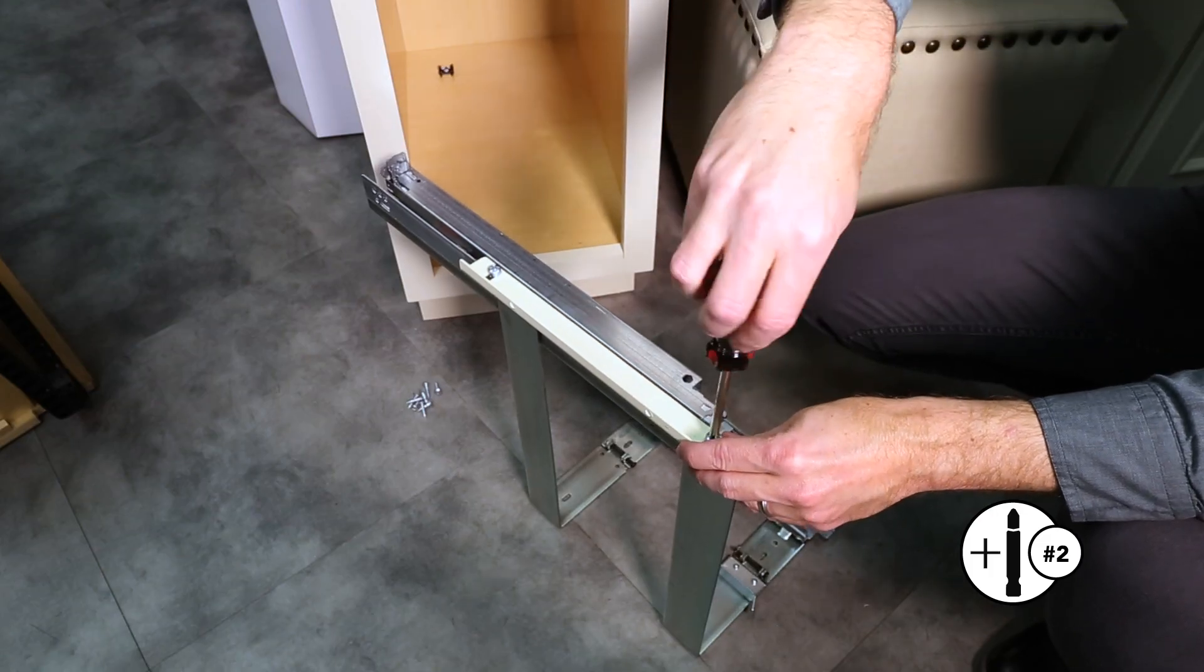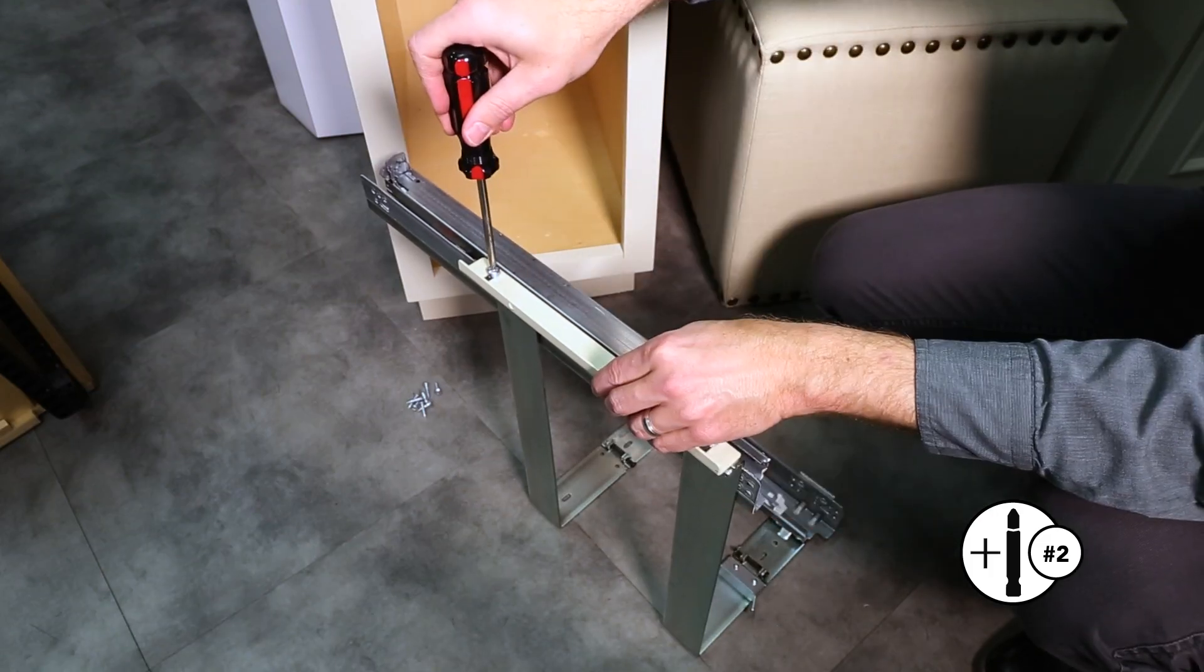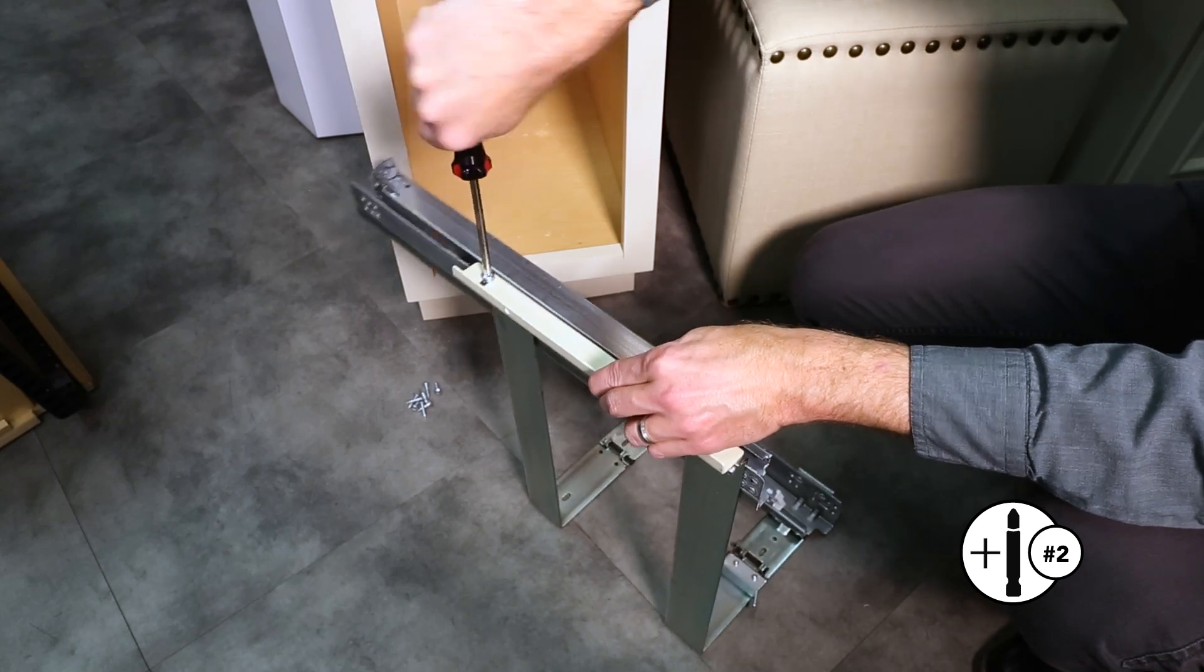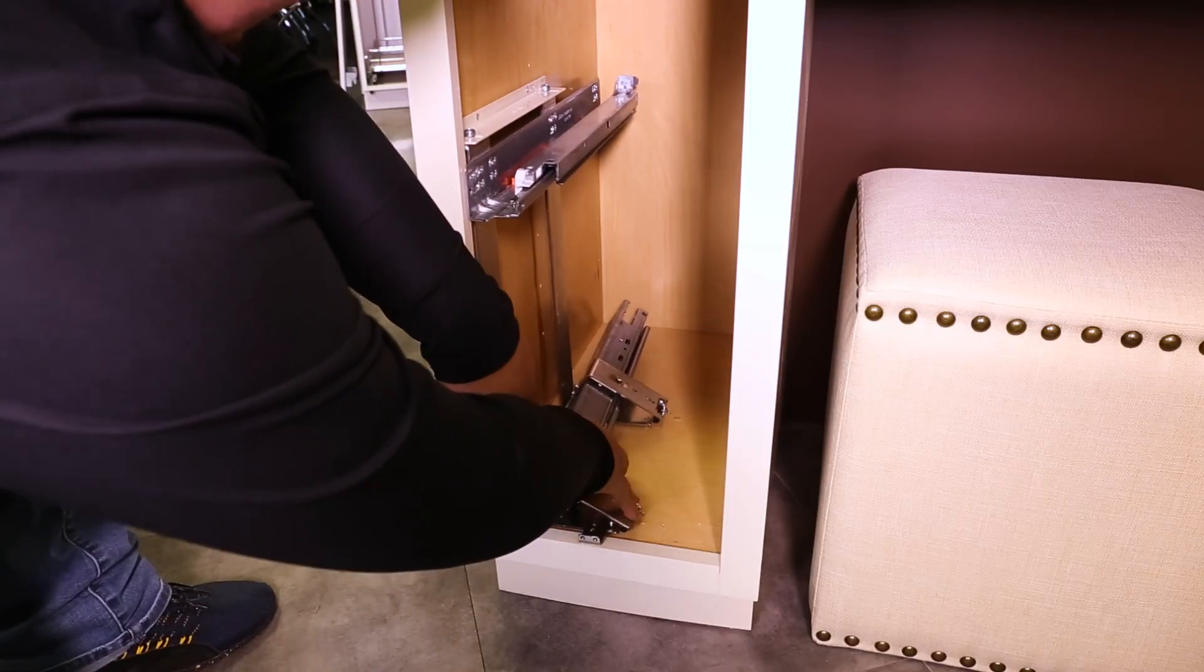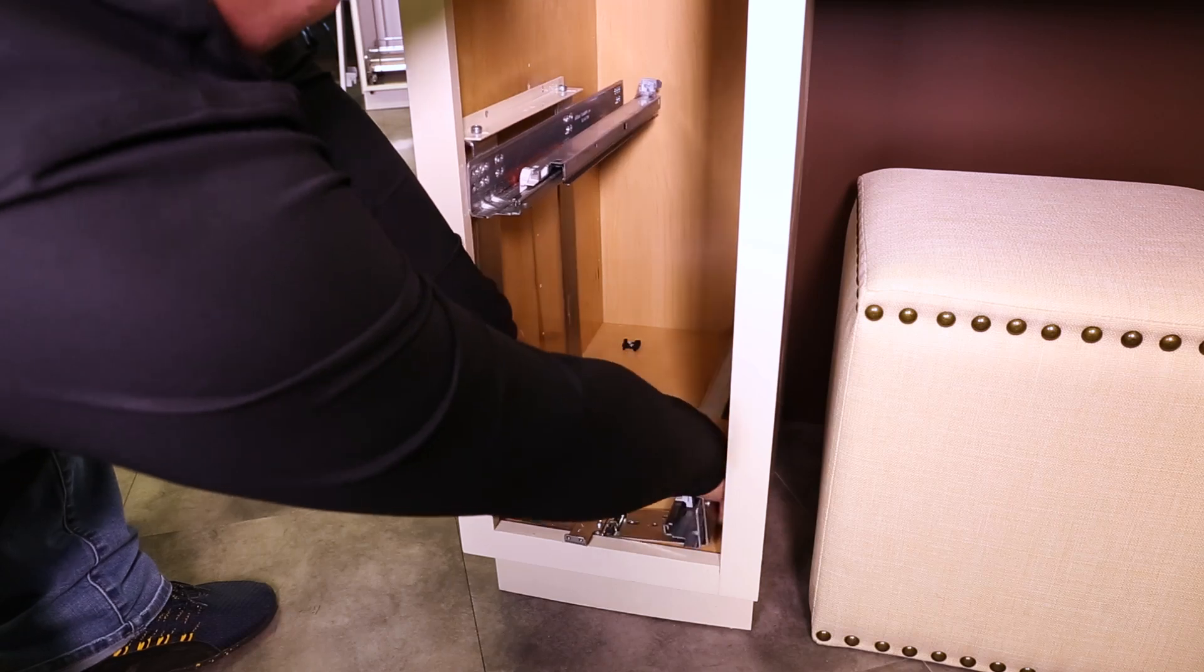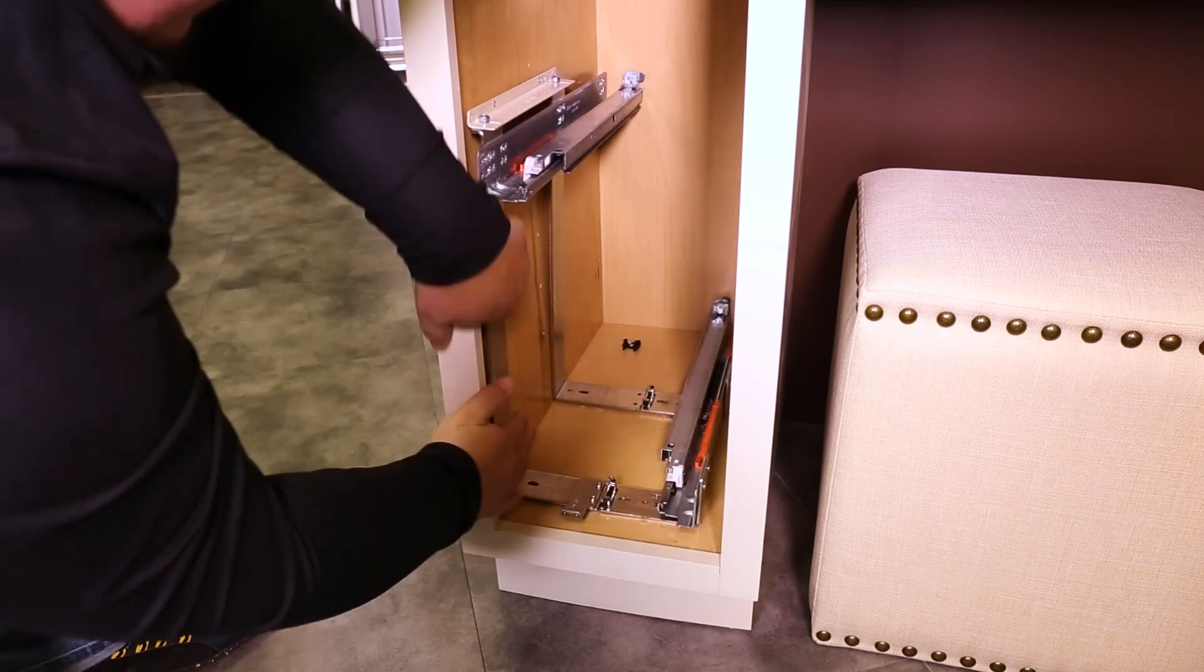Next, loosen the two screws on the adjustable side bracket. Place the adjustable slide bracket flush with the side wall and re-tighten the screws.